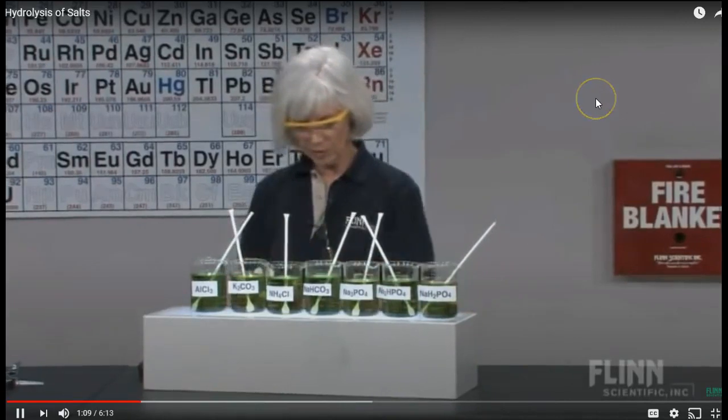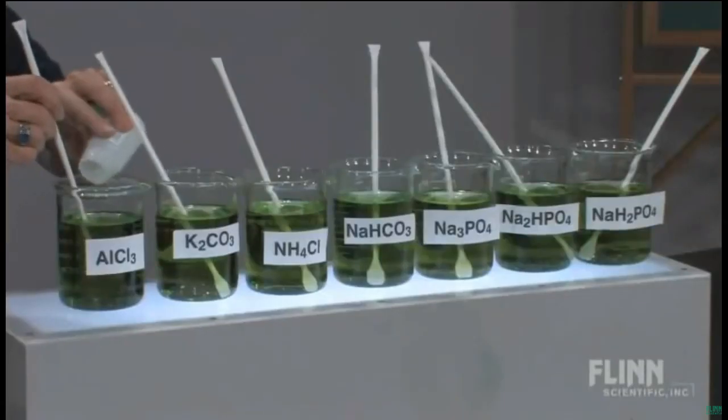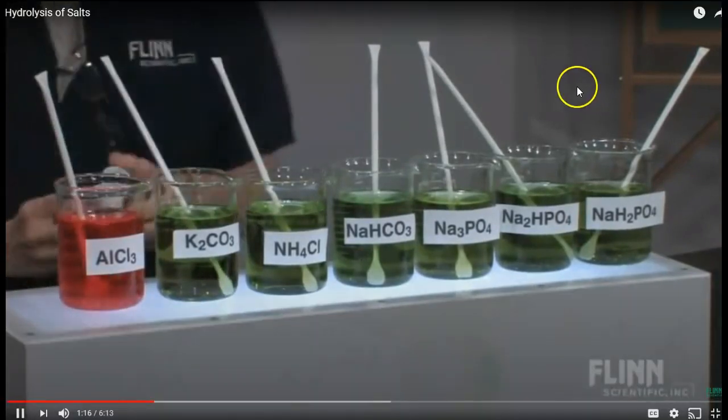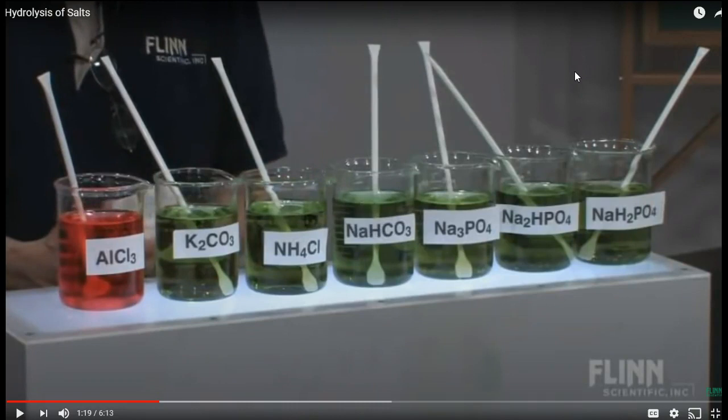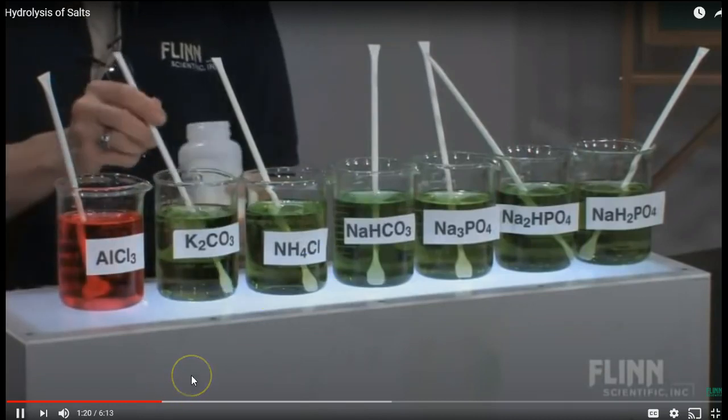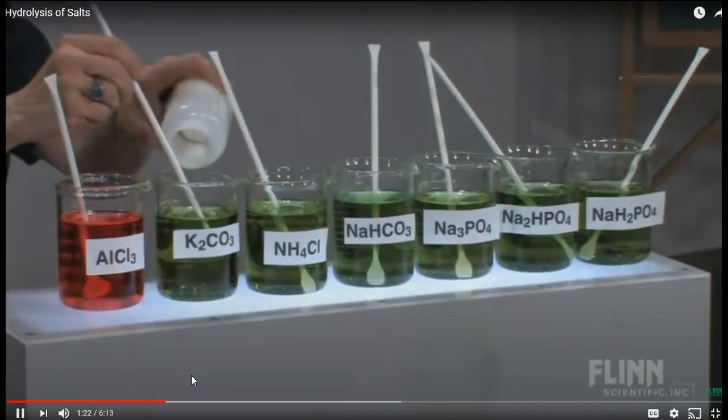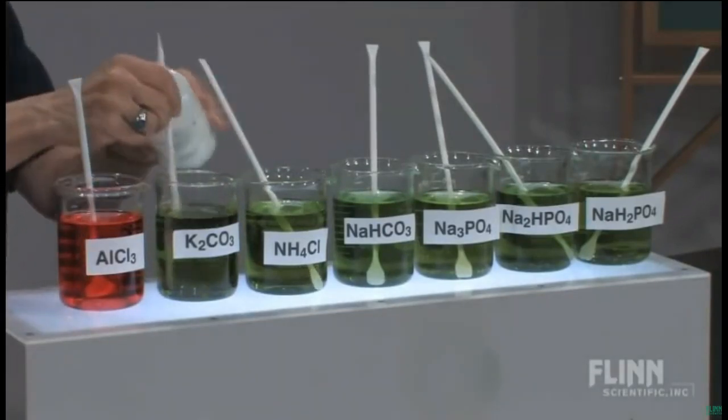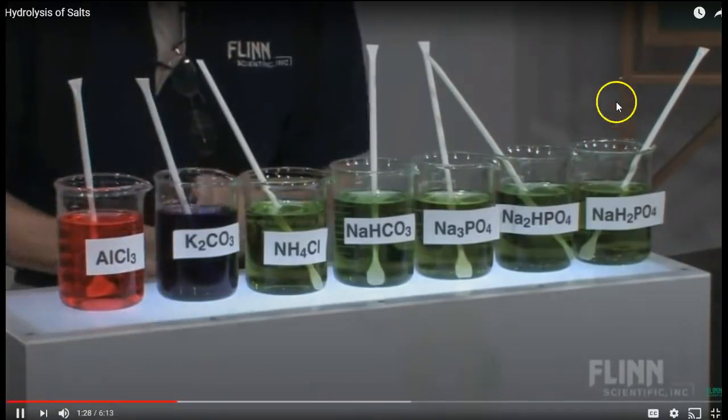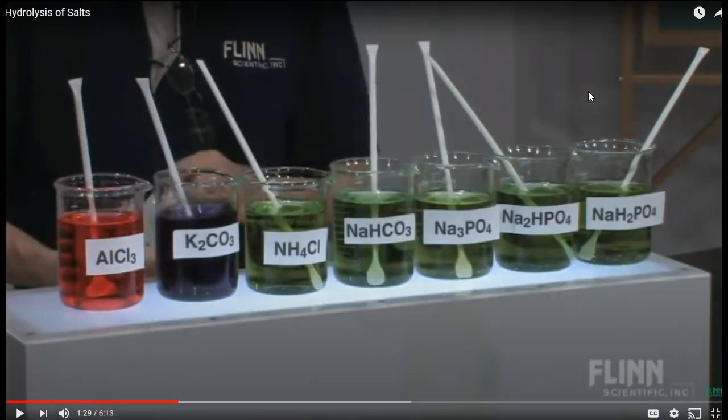I'm going to add seven different salts. My first one is aluminum chloride. I'm just going to add solid right into the beaker and stir that up. The red color indicates that it's acidic. My second one is potassium carbonate. That bluish purple color for universal indicator means basic.